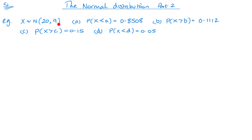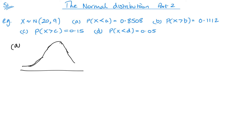Here's our first example. We've got a normal distribution with our mean and in this case variance, and then we've got four different ones to find. Remember, I said previously: always sketch it out. This is what makes the most sense — it doesn't have to be a perfect diagram, as you can see here mine's pretty pathetic.